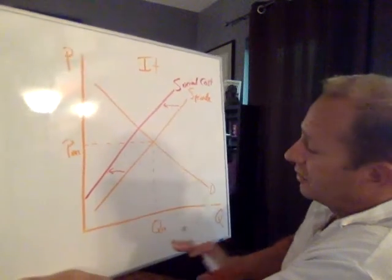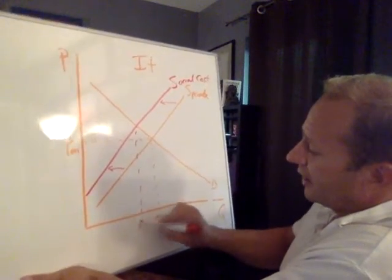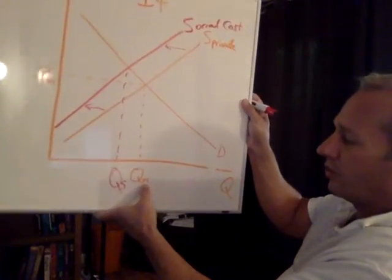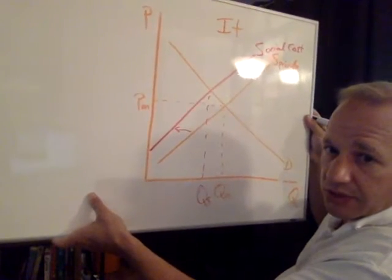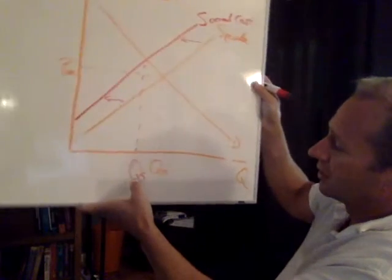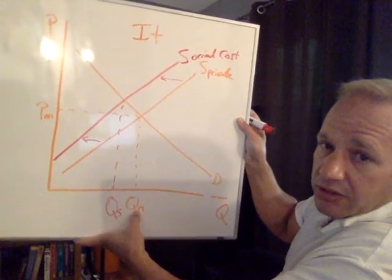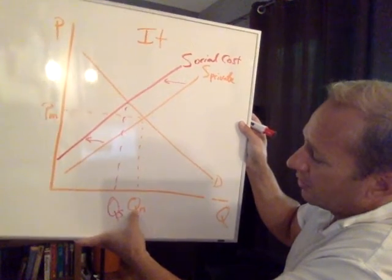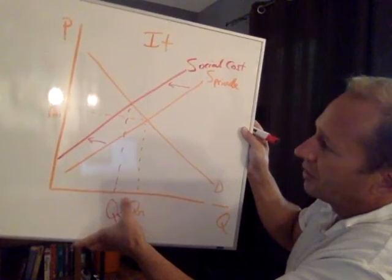This supply curve ought to be back here if you factored in all costs. What does that mean about how much of the good is supplied to market? Too much is provided when we don't factor in all the costs. If producers aren't carrying all the costs because some is being passed on to others in the form of pollution, too much is being provided to market. That gap represents an overproduction of the good.